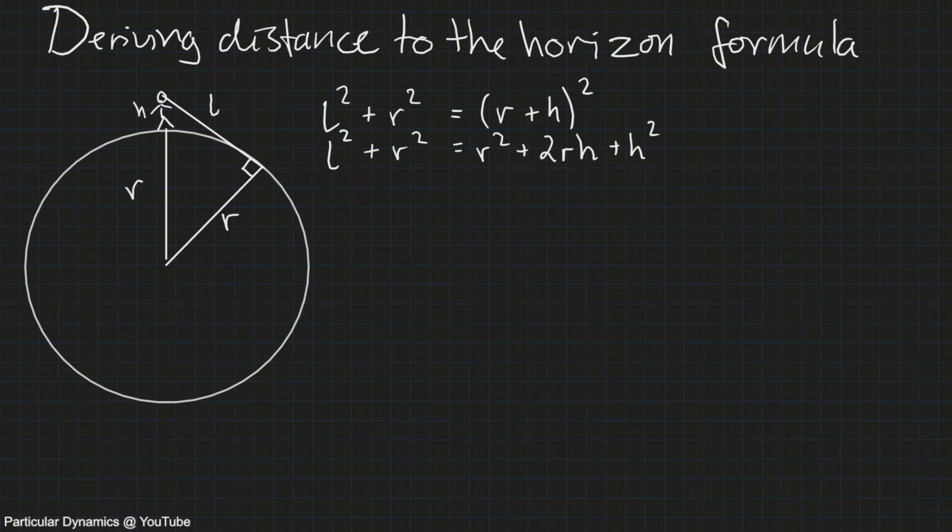We notice that a couple of things cancel immediately. r squared appears on both sides. And like with the 8 inches per mile squared formula, we can make an approximation or an assumption. And we're going to assume that the height of the observer h is much smaller than the radius of the earth r.